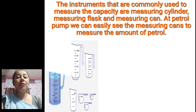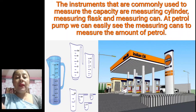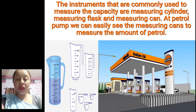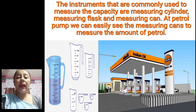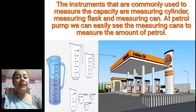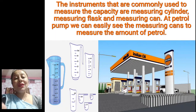The instruments commonly used to measure capacity are measuring cylinder, measuring flask, and measuring can. These instruments have a marked scale — from 0 to 1 liter, 1 liter to 2 liters — so you can read the amount of liquid. You can also see measuring cans used to measure the amount of petrol at the petrol pump.